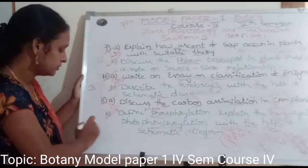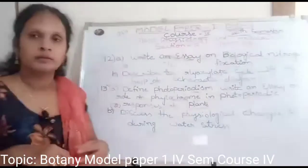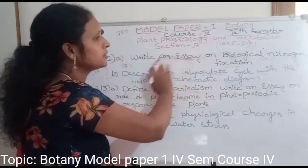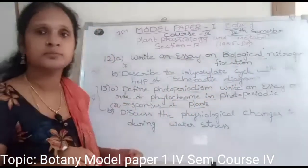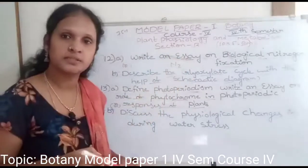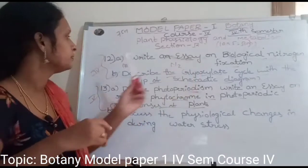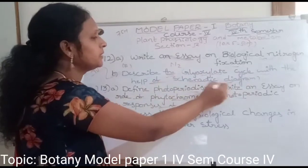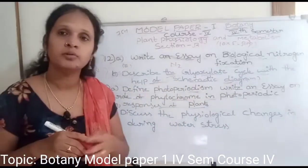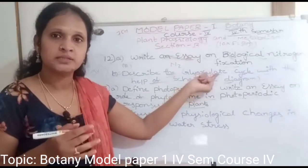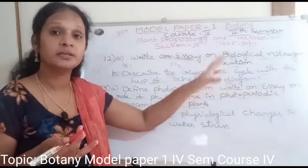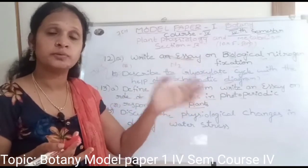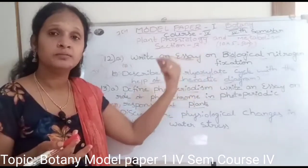Question 12a: Biological nitrogen fixation, also called N2 fixation. Question 12b: Describe the glyoxylate cycle with a schematic diagram. The glyoxylate cycle is a modified Krebs cycle. According to Kornberg's investigation, it is called the modified Krebs cycle and involves formation of sucrose from fats, explained with a diagram.